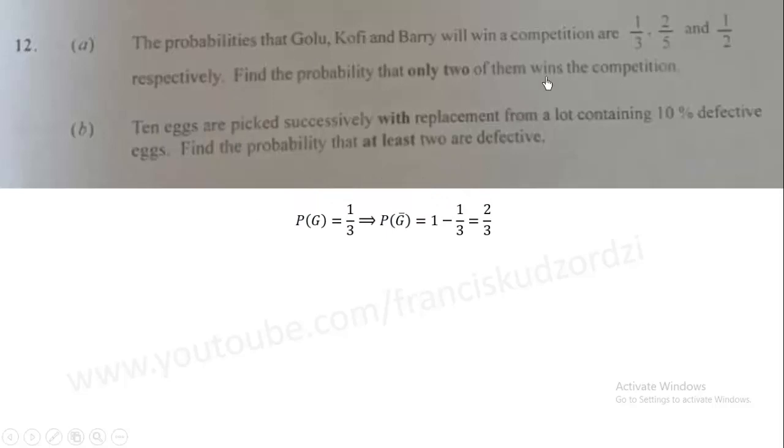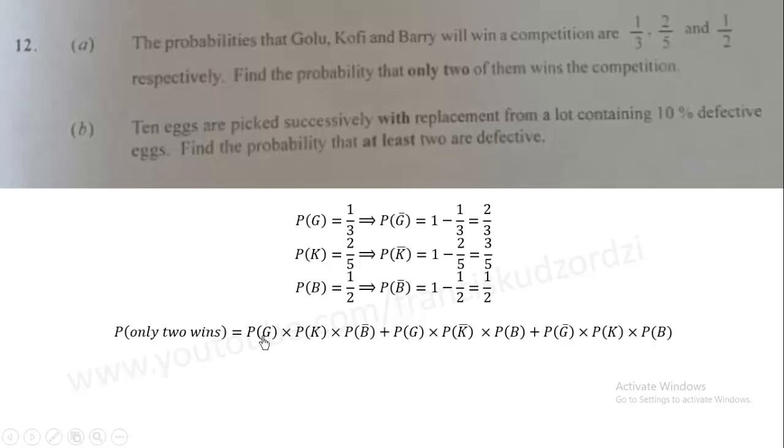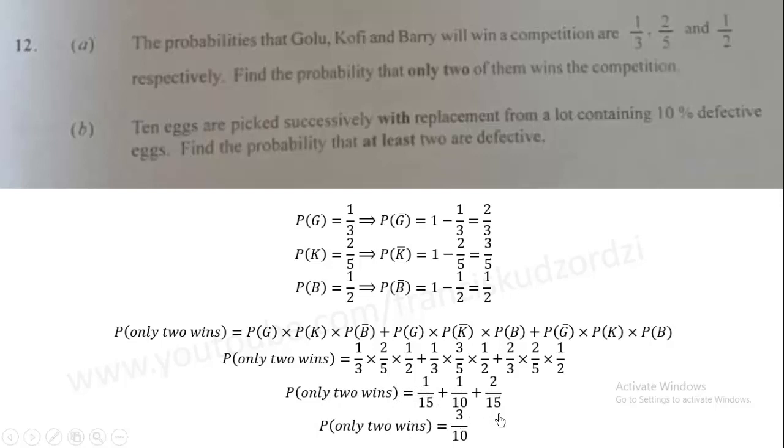Probability that only two of them win. Let's calculate probability of win and lose. Win is giving us 1 over 3 for Golu, so the loss will be 2 over 3. Similarly, we have that of Kofi and Barry. What do we do next? We are finding that only two of them win the competition. Either Golu and Kofi win and Barry loses, Golu and Barry win and Kofi loses, or Golu loses and Kofi and Barry win. We substitute the respective probabilities, then we simplify and obtain 3 over 10 as the answer.